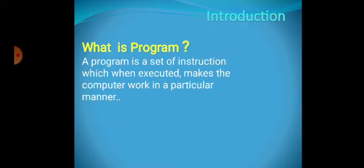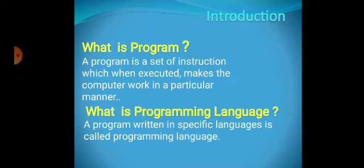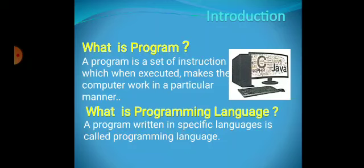What is a program? A program is a set of instructions which, when executed, makes the computer work in a particular manner. So a program is a set of instructions given to a computer to execute in order to get a result. What is a programming language? A program written in a specific language is called a programming language. There are different types of programming languages — you can see some of them in the picture, like C, Java, and PHP.